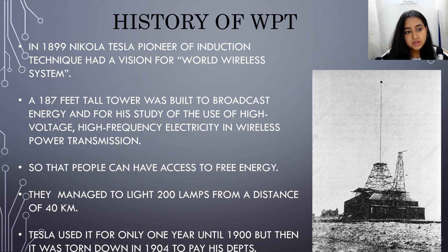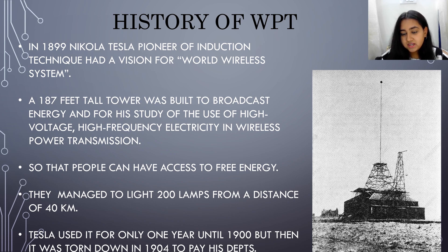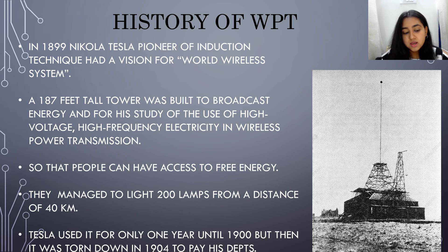History of WPT: In 1899, Nikola Tesla, using his induction technique, had a vision for a worldwide wireless system. A 187-feet tall tower was built to broadcast energy and for his study of high voltage, high frequency electricity in wireless power transmission. This tower was built so that people could have access to free energy. They managed to light 200 lamps from a distance of 40 kilometers. Tesla used it until 1900, but it was torn down in 1904 to pay his debts.